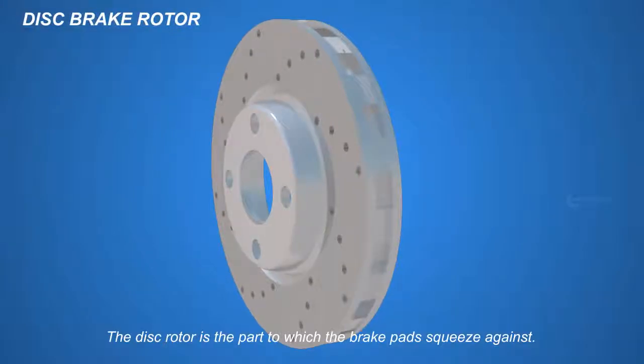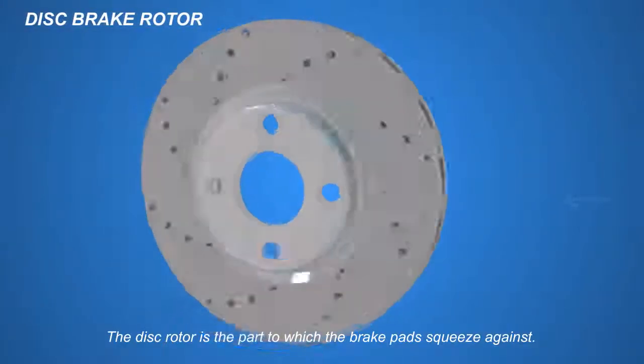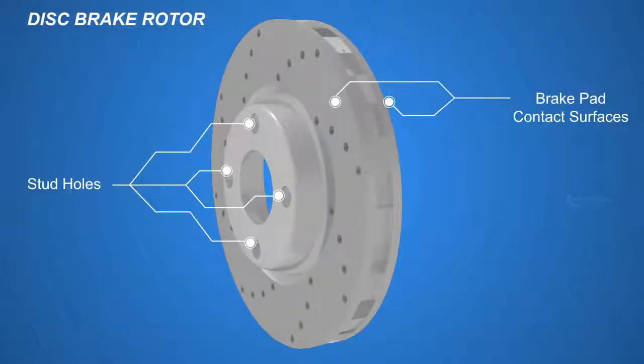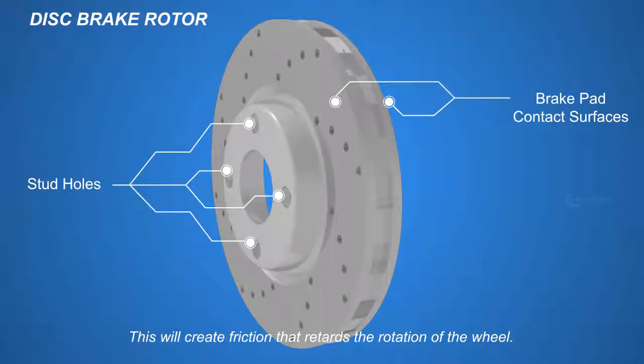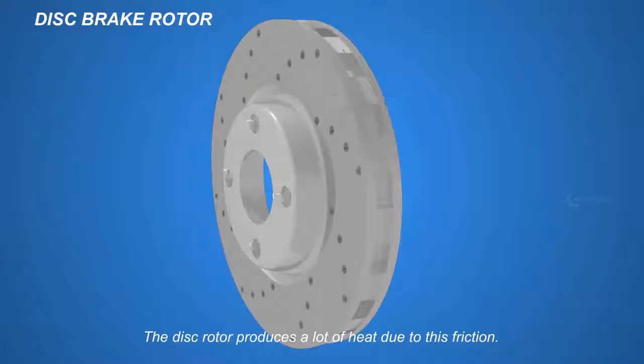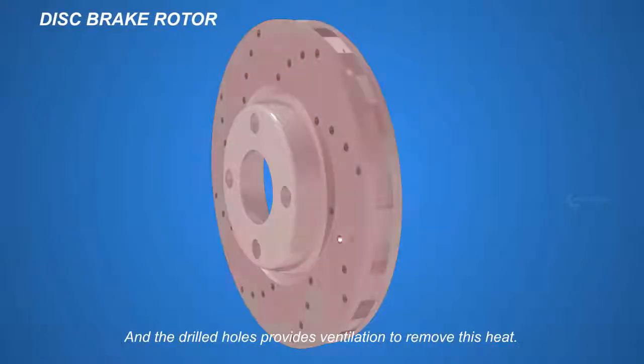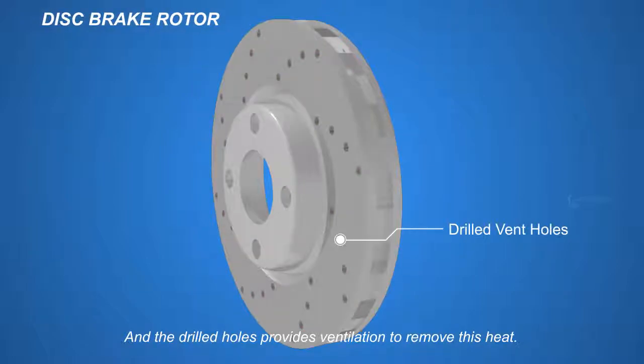The disc rotor is the part to which the brake pads squeeze against. This will create friction that retards the rotation of the wheel. The disc rotor produces a lot of heat due to this friction, and the drilled holes provide ventilation to remove this heat.